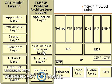The third layer is the transport layer. The transport layer provides end-to-end data transfer by delivering data from an application to its remote peer. Multiple applications can be supported simultaneously. The most used transport layer protocol is the Transmission Control Protocol, which provides connection-oriented, reliable data delivery, duplicate data suppression, congestion control, and flow control.